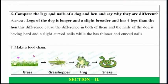Sixth question: compare the legs and nails of a dog and a hen and say why they are different. The legs of a dog are longer, slightly broader, and the dog has four legs unlike the hen. The nails of the dog are broader and slightly covered, while the hen has thinner and sharper nails.